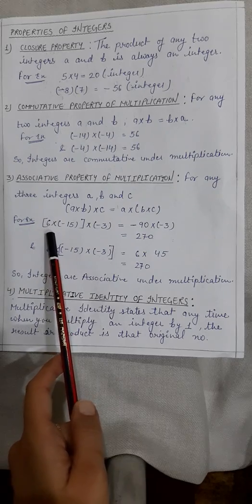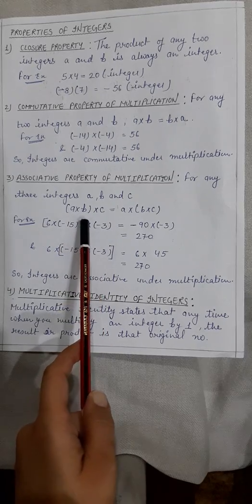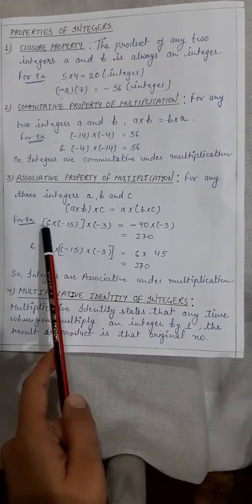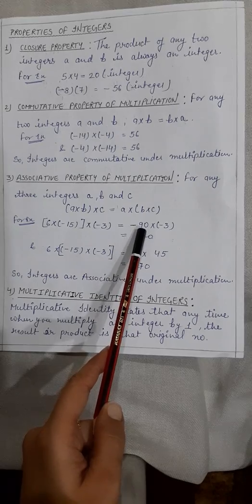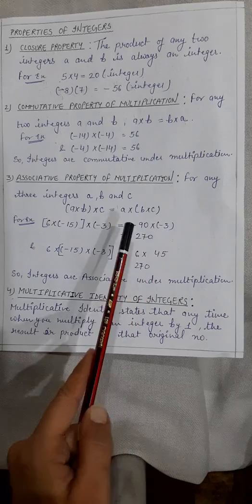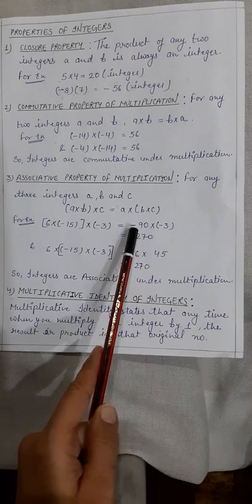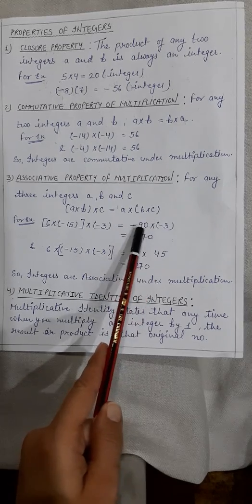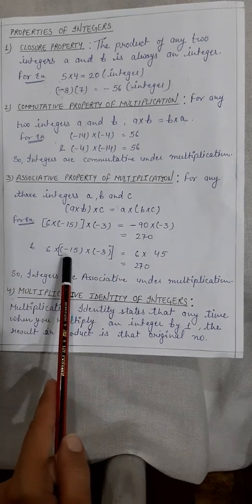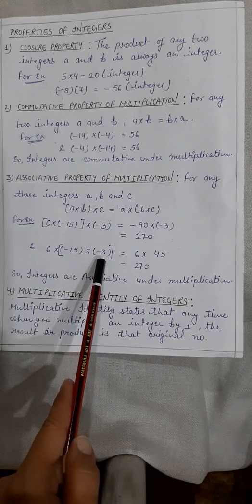Here I have taken three integers: 6, minus 15, and minus 3. I am first grouping 6 and minus 15. So first solve 6 into minus 15 — the answer will be minus 90. And when you multiply it with minus 3, the answer will be 270, which is positive because the multiplication of two negative integers gives a positive result.